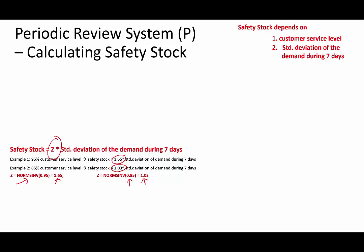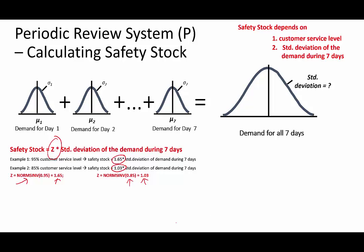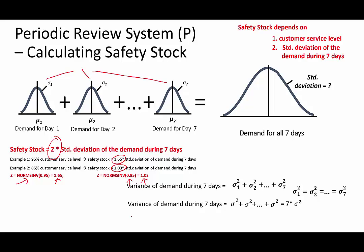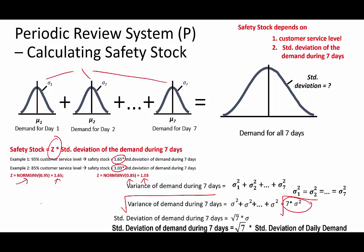Now let us focus on how to calculate the standard deviation of the demand during seven days. The variance of the demand during seven days is equal to the sum of all the variances from day one to day seven — this requires the assumption that daily demands are independent. If all distributions have the same variance, this simplifies to seven times the variance of the daily demand. Taking the square root of both sides, the standard deviation of demand during seven days is the square root of seven times the standard deviation of daily demand.